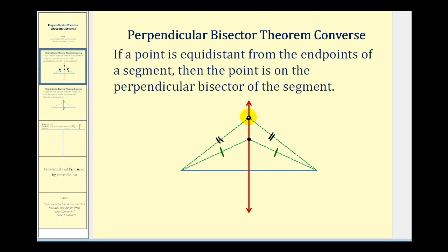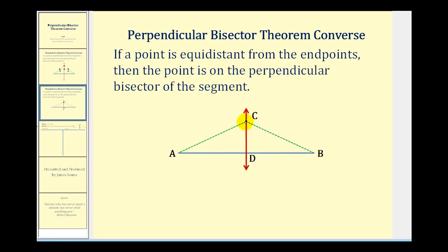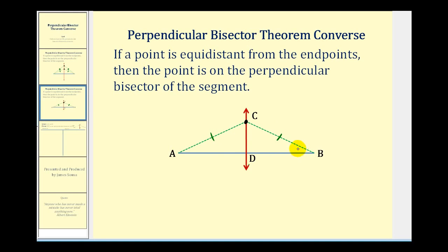Before we write our proof, let's talk about a strategy. If we consider point C knowing that it's equidistant from the endpoints — that segment AC is congruent to segment BC — we want to prove this red line is the perpendicular bisector of segment AB. We want to prove triangle ACD is congruent to triangle BCD using side-angle-side congruence. The larger triangle would be isosceles because it has two congruent sides, so the base angles would be congruent — angle A is congruent to angle B.